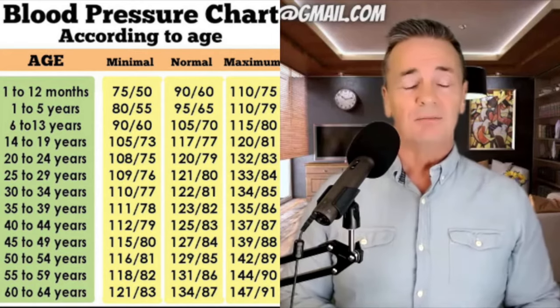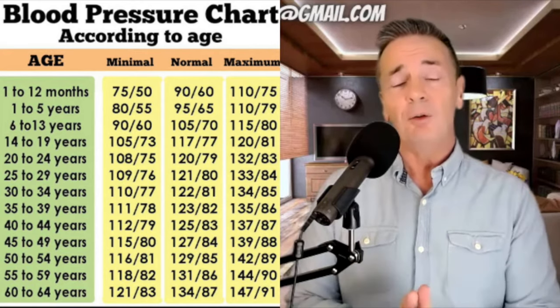The easiest way to demonstrate that different blood pressure is needed is to imagine a giraffe with a very long neck — to get blood up to the top of its head requires more pressure than if it had a shorter neck. A short-necked giraffe will have less blood pressure than a long-necked one.